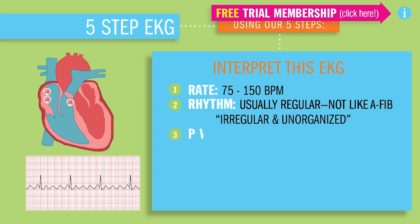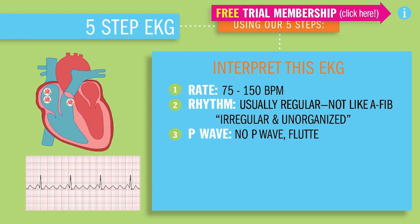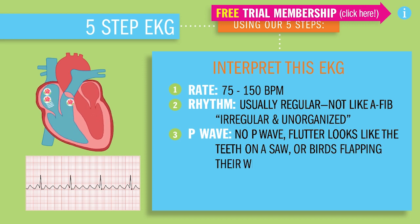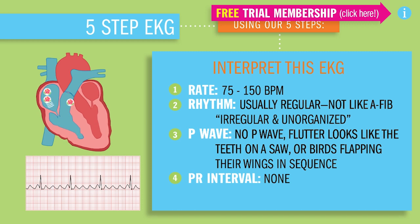Now P waves — there are going to be no P waves because the atria are not contracting. Instead, you'll get an organized flutter that kind of looks like teeth on a saw or birds flapping their wings in unison. Step four, our PR interval — there's going to be none because the atria are not contracting. And step five, the QRS — usually normal and upright.